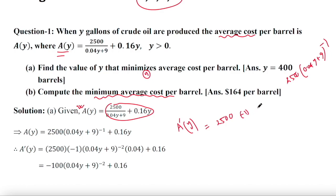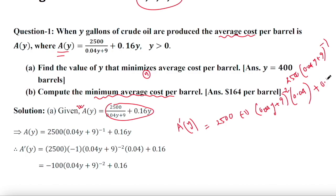minus 1 times (0.04y + 9) to the power minus 2, multiplied by 0.04, because the derivative of (0.04y + 9) equals 0.04. If you don't understand these things clearly, you need to watch my previous videos. Plus the derivative of 0.16y will be 0.16.